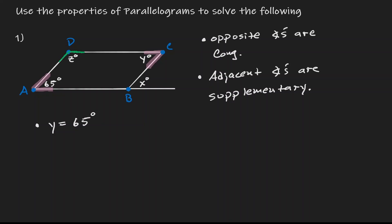Using the second property, we can say that angle Z plus 65 must be supplementary, therefore equivalent to 180 degrees. We can do simple math: 180 minus 65 is 115, so Z is equivalent to 115.